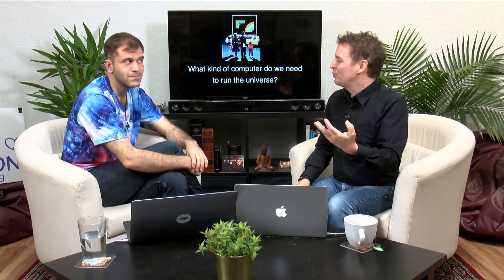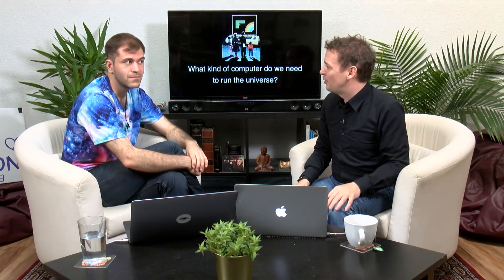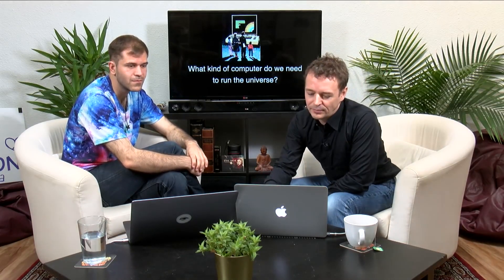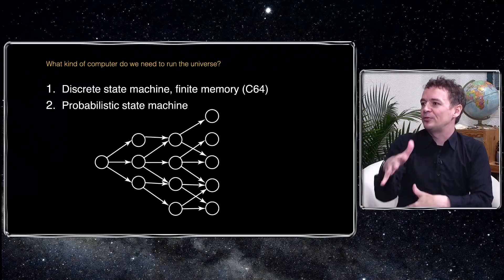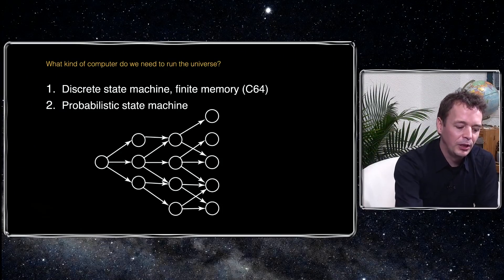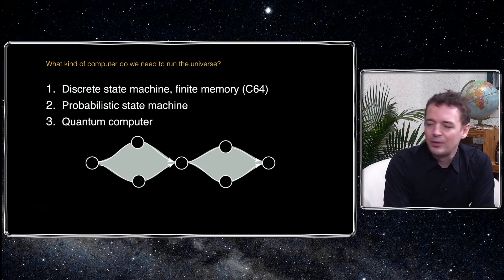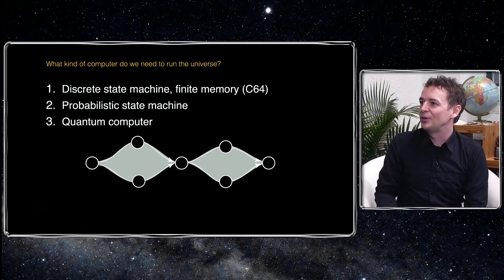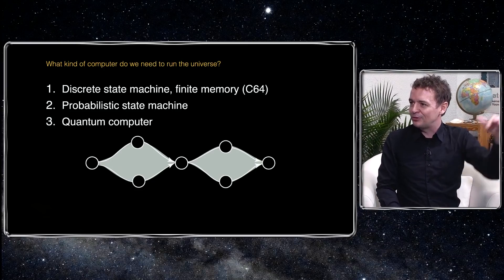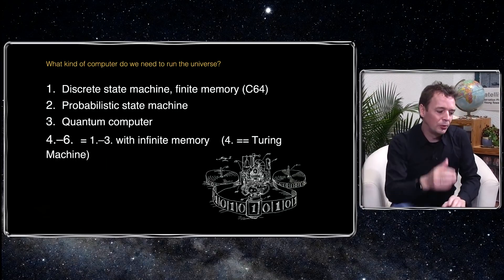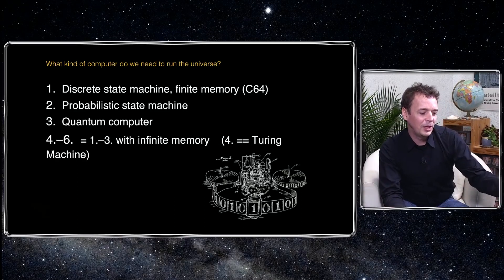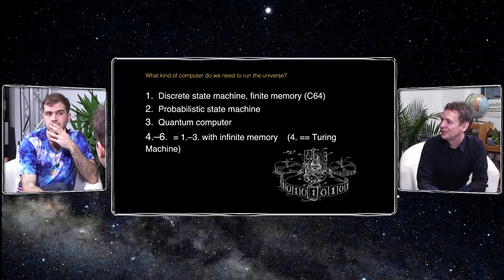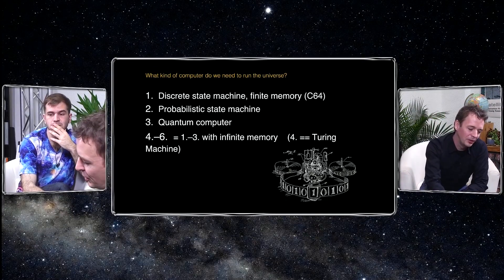We can ask ourselves: what kind of computer do we need to produce the patterns that we observe? It could be a discrete state machine like my Commodore 64 with a finite amount of memory, or it could be a probabilistic state machine that randomly goes from state to state, or has a certain degree of randomness. Or it could be some quantum computer where every state is a superposition of ground states. Or one of these versions but with infinite memory — number four is basically our discrete state machine with infinite memory, our old friend the Turing machine, this mathematical formalization of the modern computer.